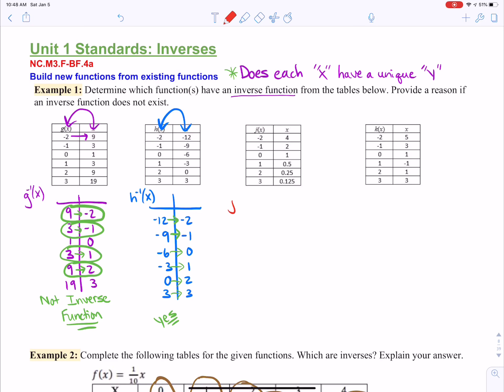All right, so the inverse of j of x would be to switch x and y. So if you have four negative two, two negative one, one zero, zero point five one, zero point two five two, and zero point one two five three.